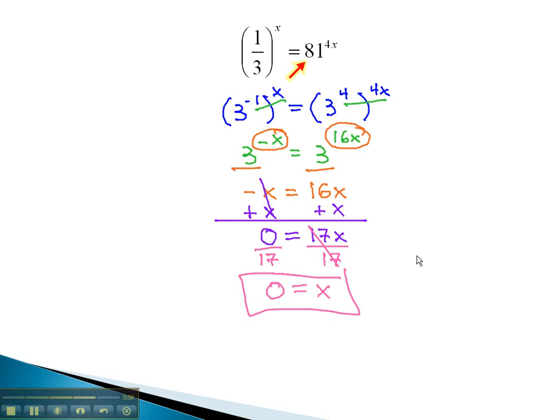By rewriting our numbers as an exponential function with the same base on both sides, we can quickly solve by setting those exponents equal to each other.